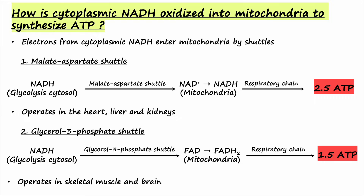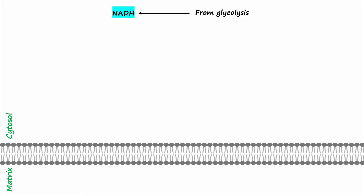This is the key difference between the two shuttles. In the malate-aspartate shuttle, electrons from NADH are transferred to NAD+ in the mitochondria, which is reduced to NADH and synthesizes 2.5 molecules of ATP. Whereas in the glycerol-3-phosphate shuttle, electrons are transferred to FAD, which is reduced to FADH2 and synthesizes 1.5 molecules of ATP.